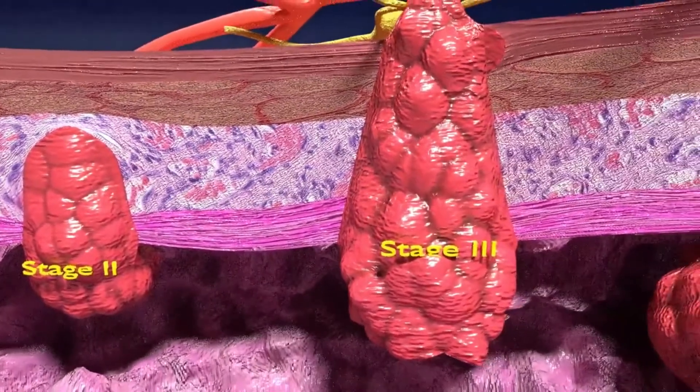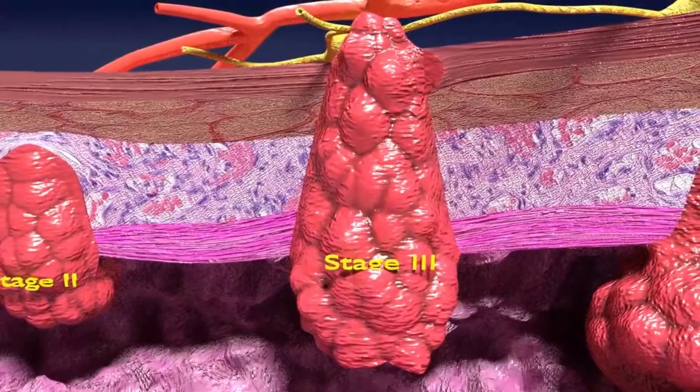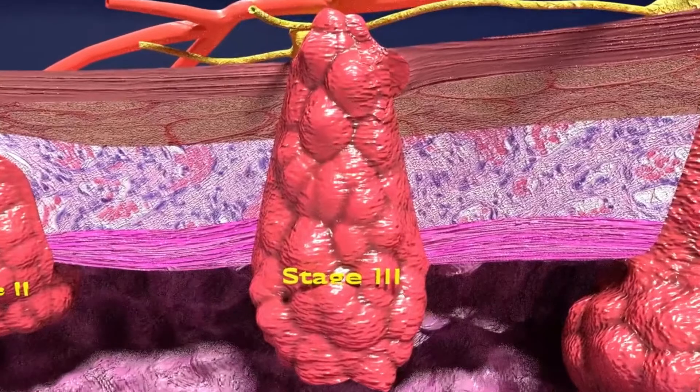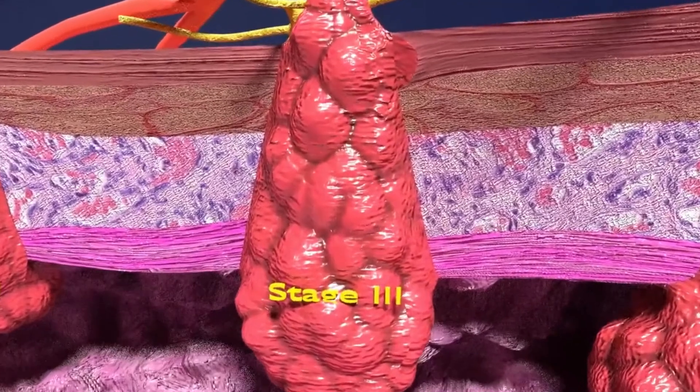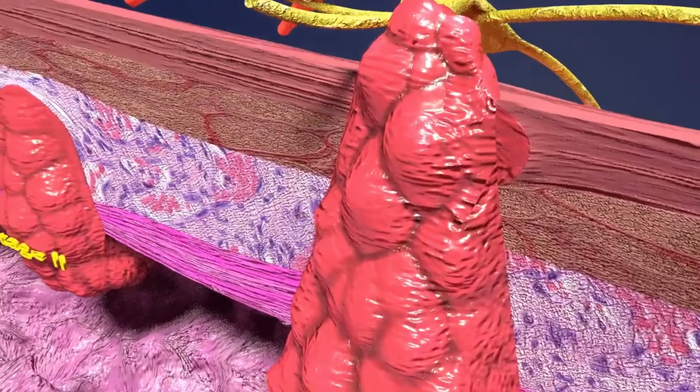In stage 3 of the tumor, you can see that the tumor mass extends through all the layers of the colonic wall, including serosa, and grows into pericolorectal tissue, but blood vessels and lymphatics are spared in this stage.